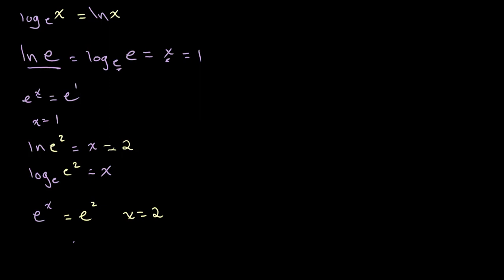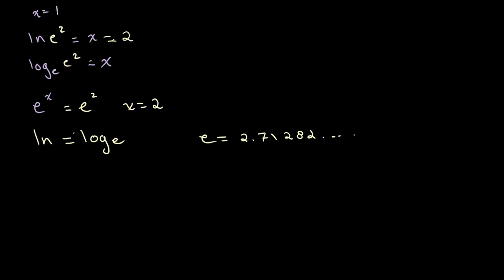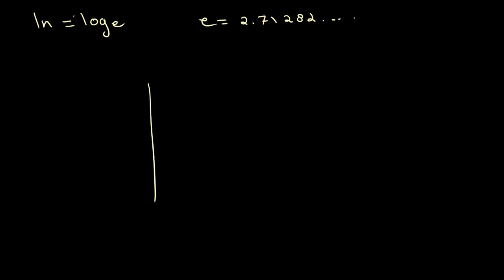So once again, ln, or the natural logarithm, is the same thing as log base E, where E equals 2.71282 going on to infinity. Now it's important to know what both the graphs of e to the power of x and ln look like. Let's get our y-axis and x-axis. You don't have to memorize each point, just the general pattern.